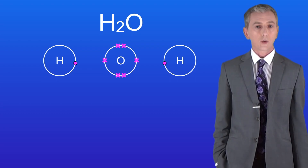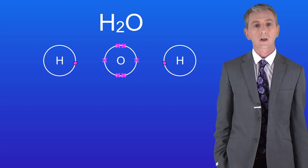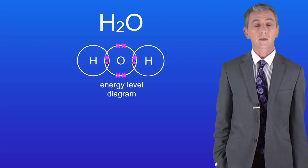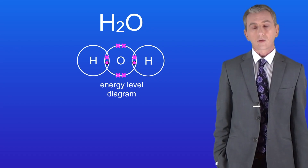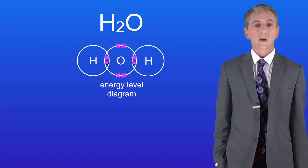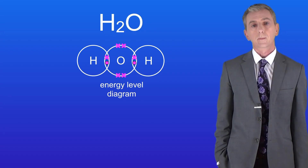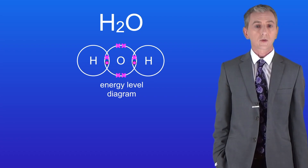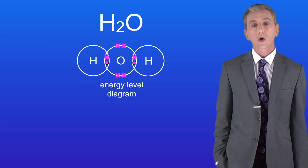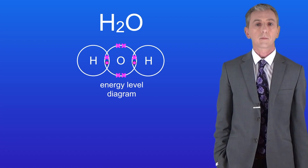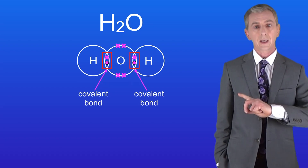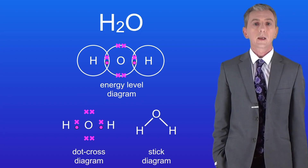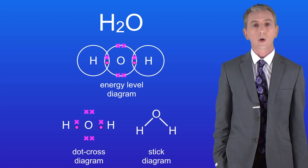We need to overlap the energy levels for the hydrogen and oxygen atoms like this. Now both the hydrogens and the oxygen have a full outer energy level. Remember that when atoms share a pair of electrons we call that a covalent bond, and I'm showing you the covalent bonds here. Here are the dot and cross diagram and the stick diagram for this molecule.